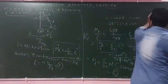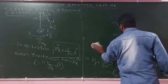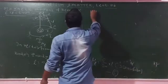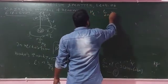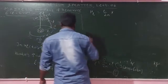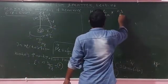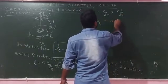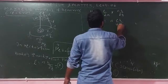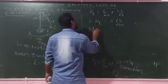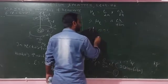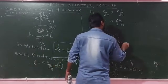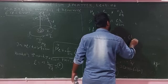Applying angular momentum quantization, mu_L equals E divided by 2M multiplied by nh divided by 2π. This simplifies to mu_L equals neh divided by 4πm, where n is the principal quantum number.